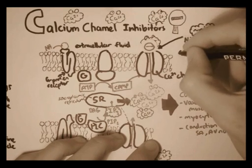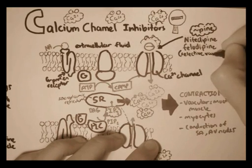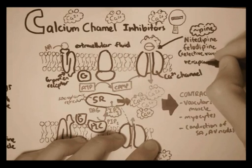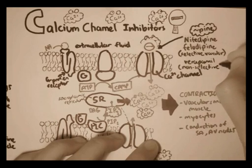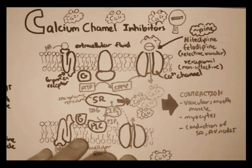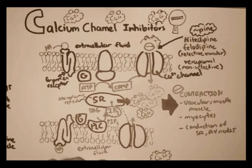These are selective for particular calcium channels, mainly in the heart. Another type is verapamil, and this one is non-selective — it targets many different types of calcium channels, inhibiting them and lowering blood pressure. So with no contraction, blood pressure is lowered.